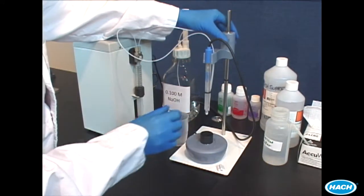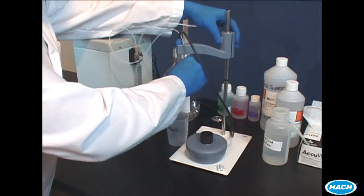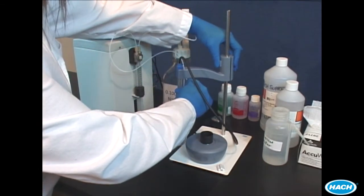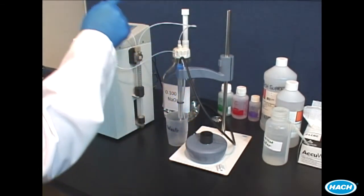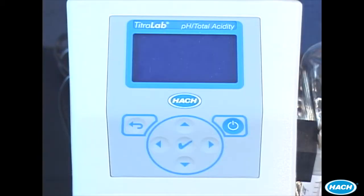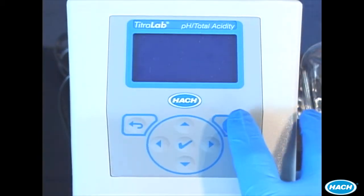First we will prime the burette. This should be done at the beginning of each day. Check that the bottle of sodium hydroxide is not empty and make sure a waste beaker is under the electrode. Now turn on the instrument.